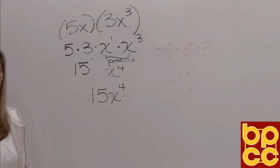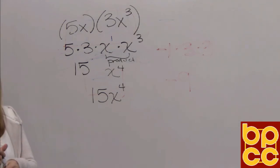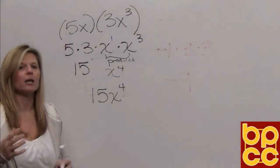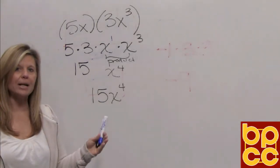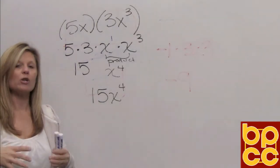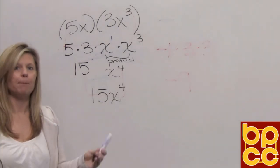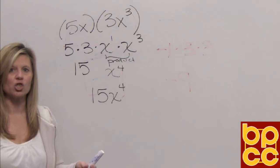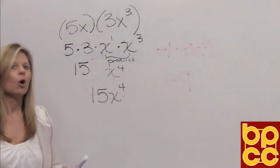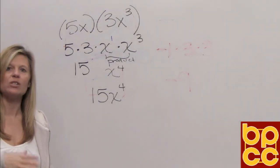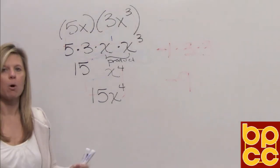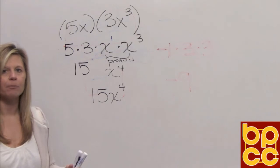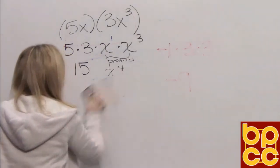That's our rule for multiplication. What you have to remember is that multiplication means to make bigger, so when you multiply, the exponents should get bigger — they should change. We're not doing adding and subtracting like in the last module; we're multiplying now.